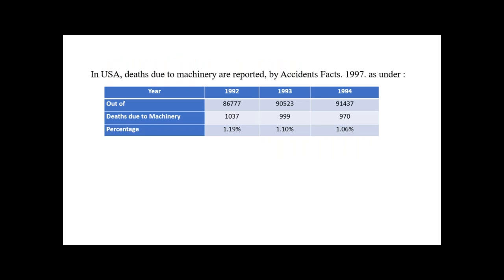From statistical data on fatality accidents, we can observe that near about one to two percent fatalities can occur due to accidents related to machineries. That is why we must focus on precautionary measures, safety operating procedures, hazard identification, and the reduction, isolation, or elimination of hazards available in engineering industries.